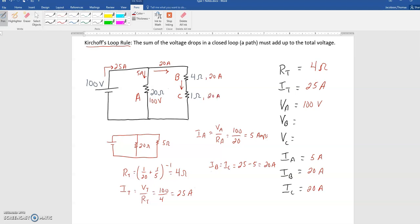And once you know that, now you know two things about each resistor. You can use Ohm's law to solve for the voltage at B. So I can do voltage of B is going to be the current, 20, times the resistance, which is 4, which is 80 volts.